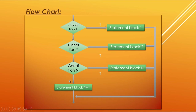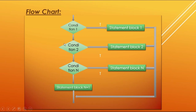If no condition from the above becomes true, the program directly comes to statement block N+1, which is the else condition. The else statement is executed when all the if and else-if conditions above it are false.